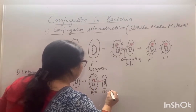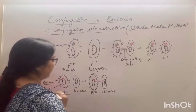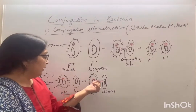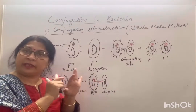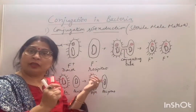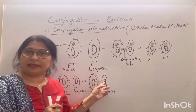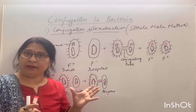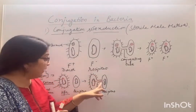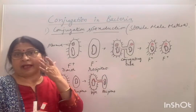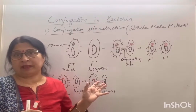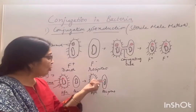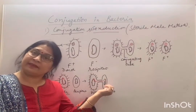In HFR conjugation, the plasmid joins with the bacterial chromosome. After joining, the epizome self-replicates, and some genetic material is transferred to the recipient cell. However, it is difficult to transfer the entire genetic material because the epizome is too large, and the conjugating tube cannot be maintained for a long time — so only a small amount of genetic material is transferred to the recipient.